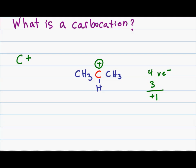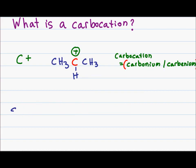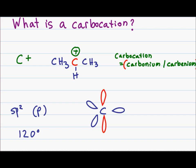A few things to note about the carbocation: it is typically referred to as a carbocation. It can also be called carbonium and carbenium, but they are very infrequently used so you don't have to memorize these. What you should know is that the carbocation is sp2 hybridized with an empty p orbital. The bond angle for an sp2 atom will be 120 degrees. Looking at the carbocation from the side, I have a carbon with three bonding sp2 orbitals and an empty p orbital lying perpendicular to my flat carbocation.